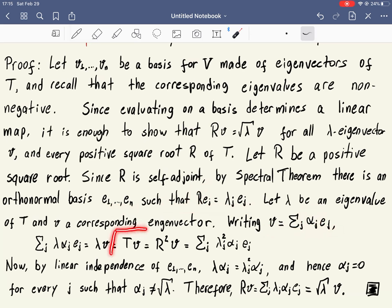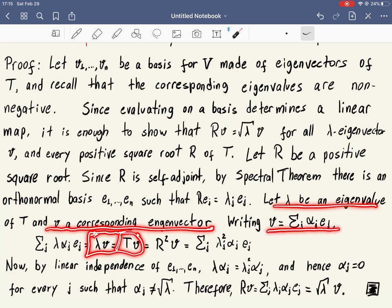So what is T of V? Well, that's lambda V, because by assumption, lambda is an eigenvalue and V is the corresponding eigenvector. And since we also know that V can be written as linear combination of the EJs, then lambda V will be the same linear combination, but now multiplied by lambda. This is TV.